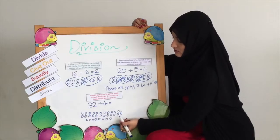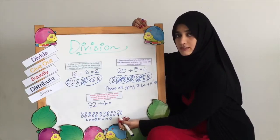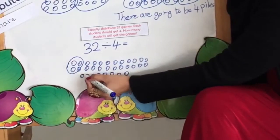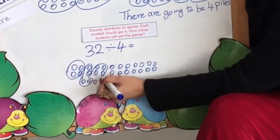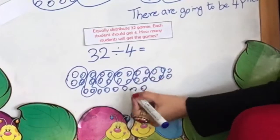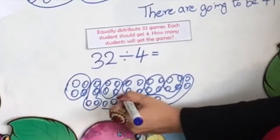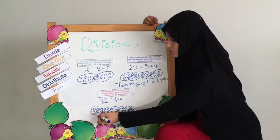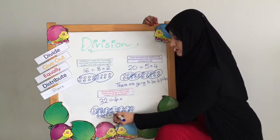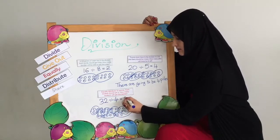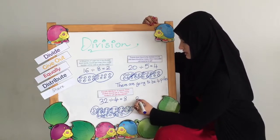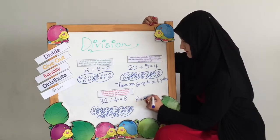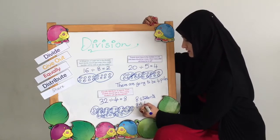Here we have 32 games. We are going to distribute them so that each child gets 4 games, counting groups of 4. To find the answer, we count the number of sets: 1, 2, 3, 4, 5, 6, 7, 8. The answer is 8 students got the games.